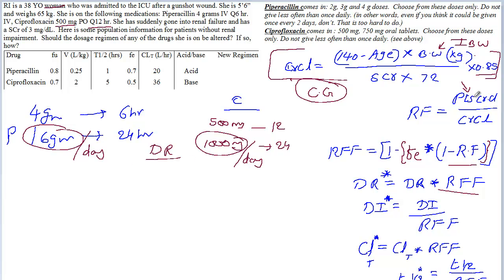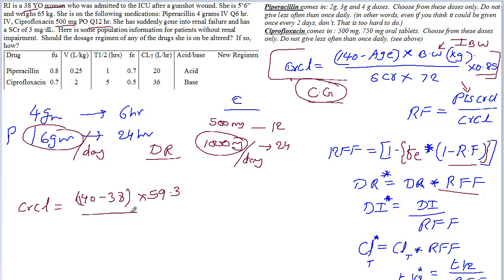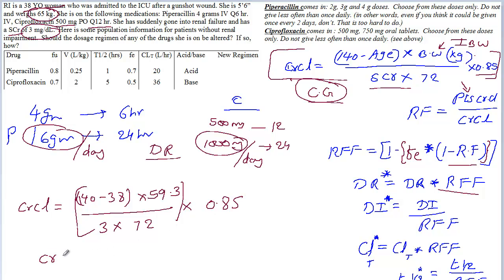To understand why we use ideal body weight, watch the Cockcroft-Gault equation video. Now solving for creatinine clearance: (140 minus 38) times 59.3 — that is the ideal body weight I calculated — divided by 3 mg/dL serum creatinine times 72, then multiplied by 0.85 because she's a female patient. The creatinine clearance of the patient is 23.80 mL/min.